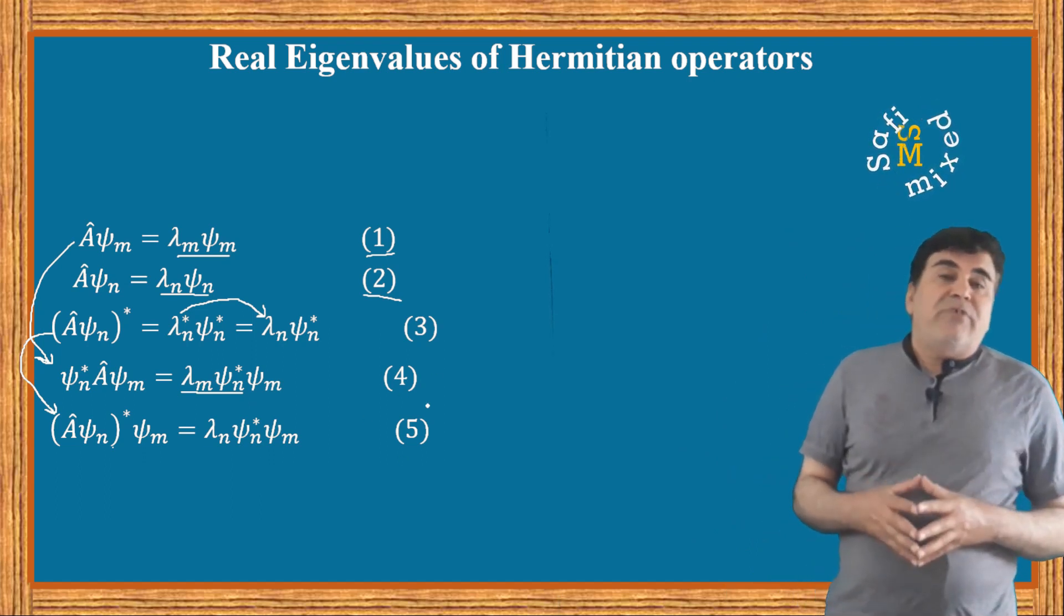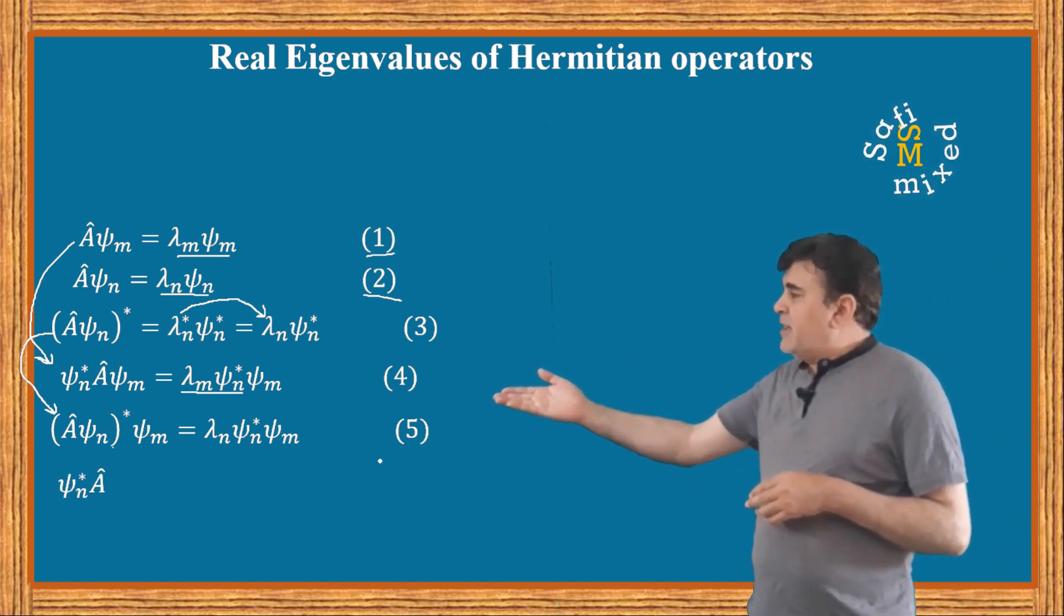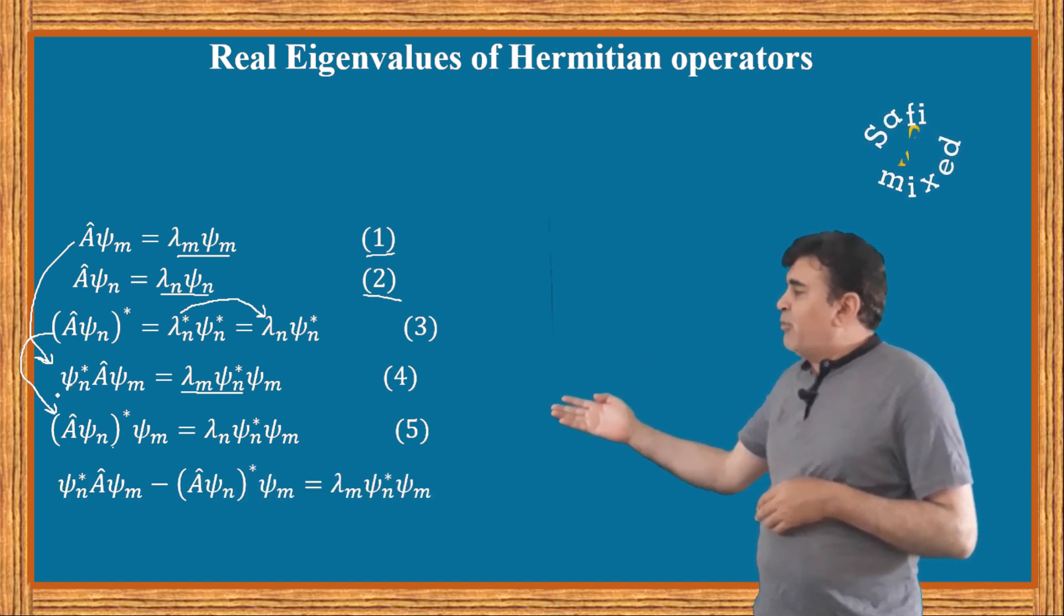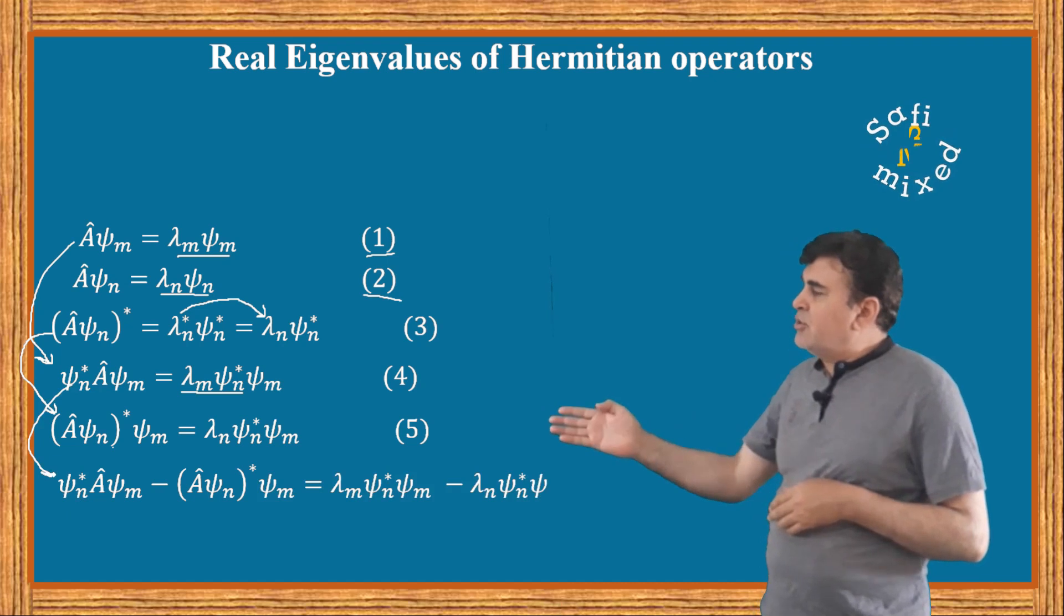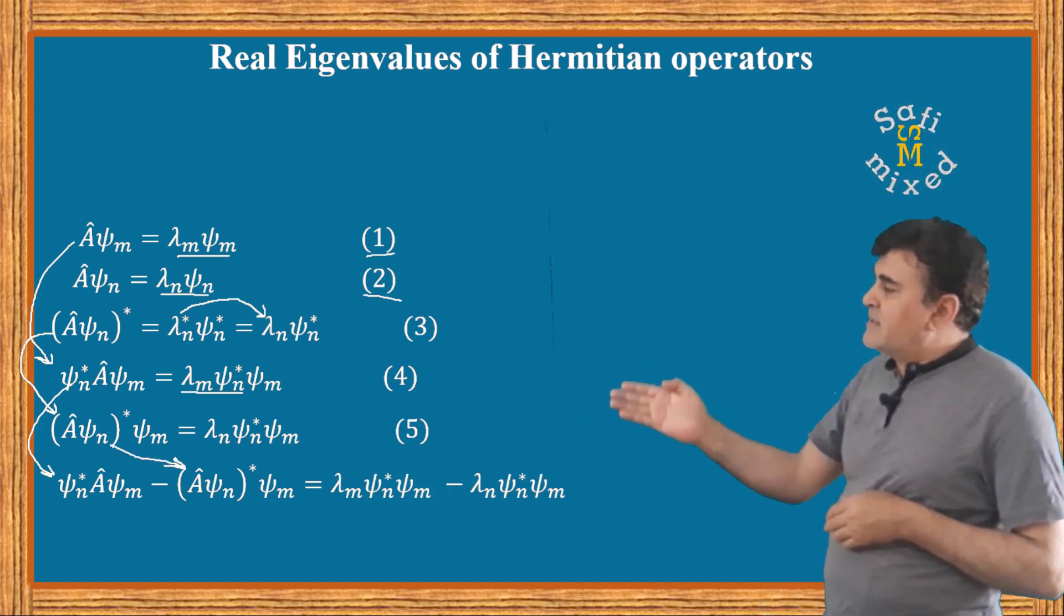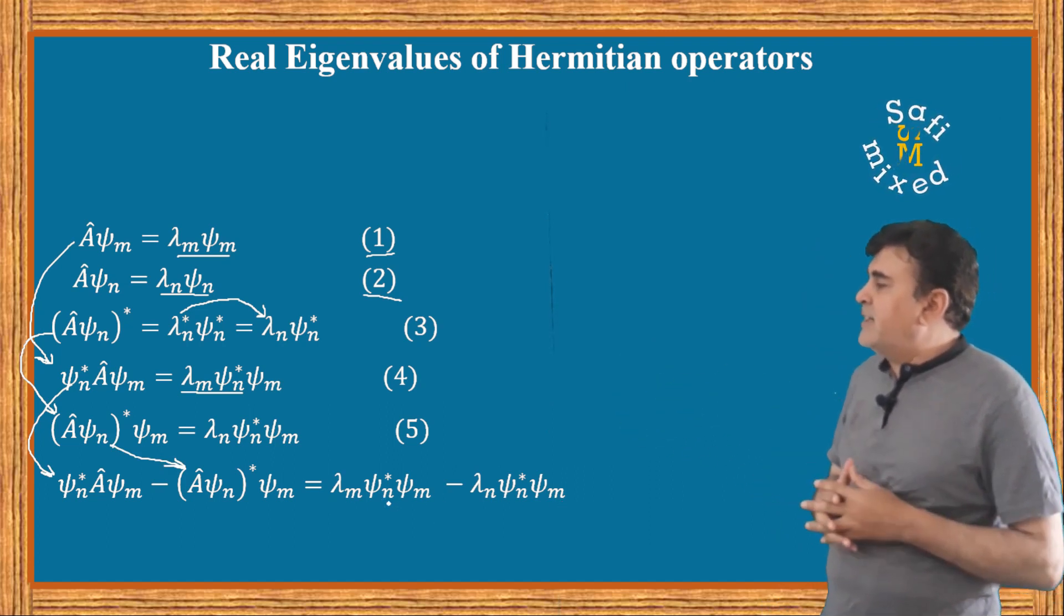Now subtracting equation 5 from equation 4, we can put the result into this equation where the first term on the left is the left side of equation 4 and the second term on the left is the left side of equation 5, and the same procedure and sequence is followed on the right side.